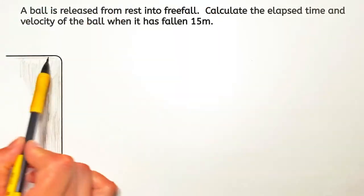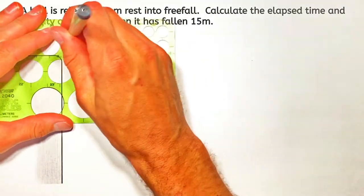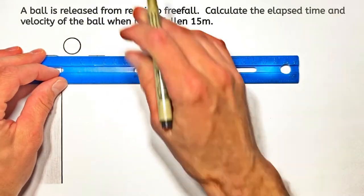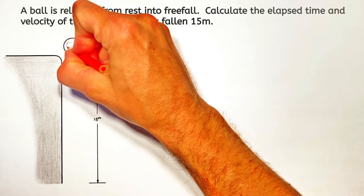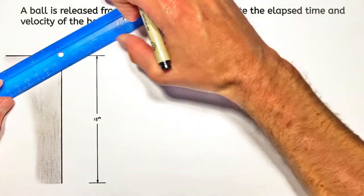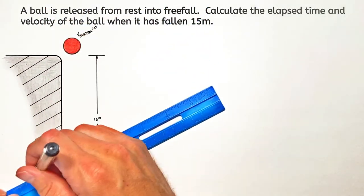Alright YouTube, today we're tackling free fall. We're going to have our little Lego guy dropping a ball from rest off a 15 meter high cliff. We're going to graph the position, velocity, and acceleration of this ball as it falls, and then use those graphs, along with the kinematic equations, to solve for the total time as well as the final velocity of the ball once it's fallen 15 meters.